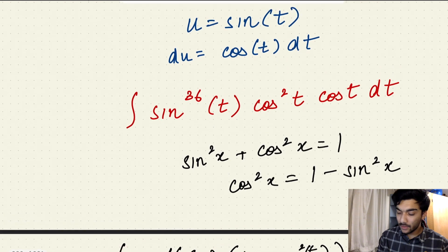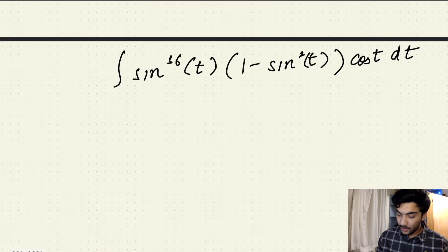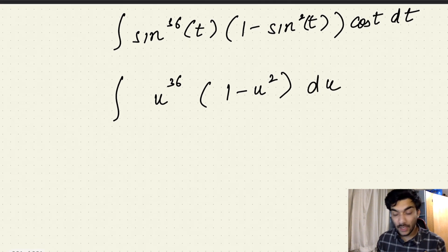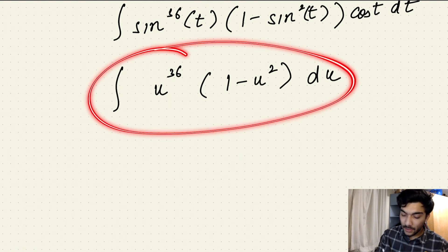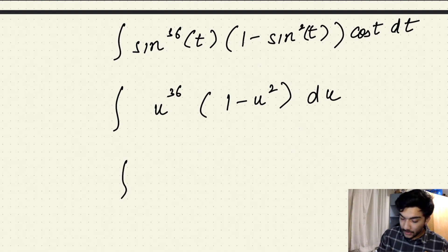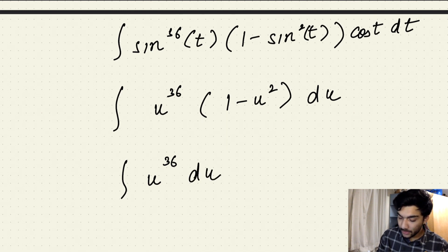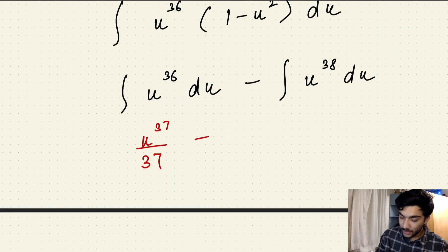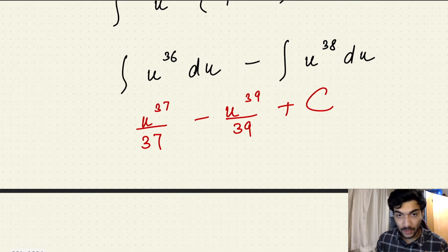Now let's make all the substitutions. Sine to the power 36t becomes u to the power 36, cosine squared t becomes 1 minus u squared, and cosine t dt becomes du. The calculation of this indefinite integral is now simple using the power rule. Splitting the integral into two parts gives us the integral of u to the power 36 du minus the integral of u to the power 38 du, which equals u to the power 37 over 37, minus u to the power 39 over 39, plus the constant of integration C.